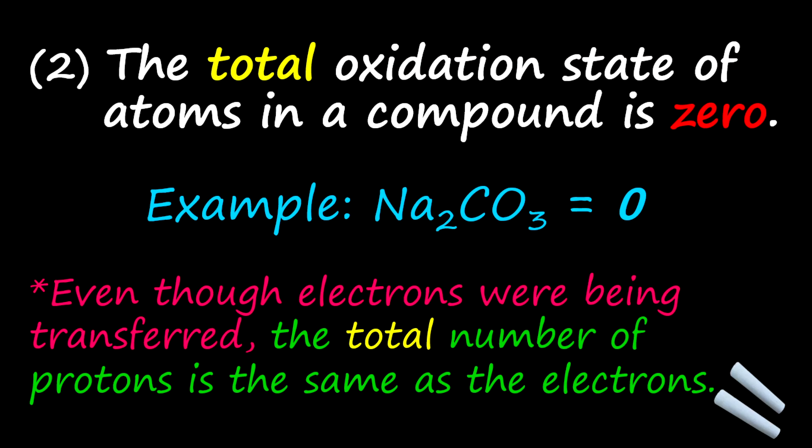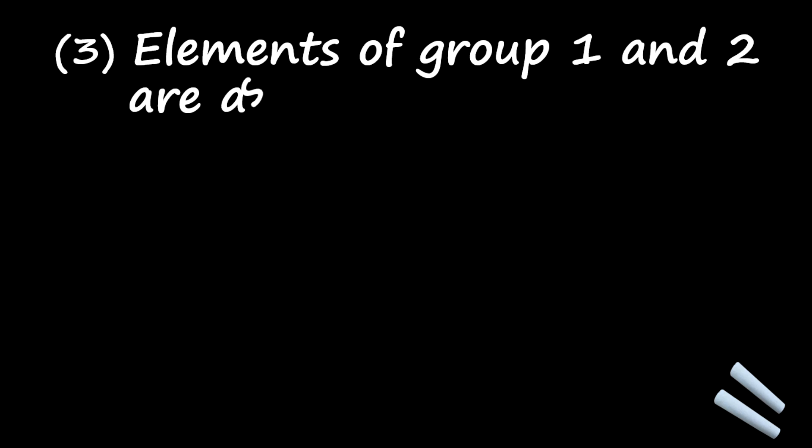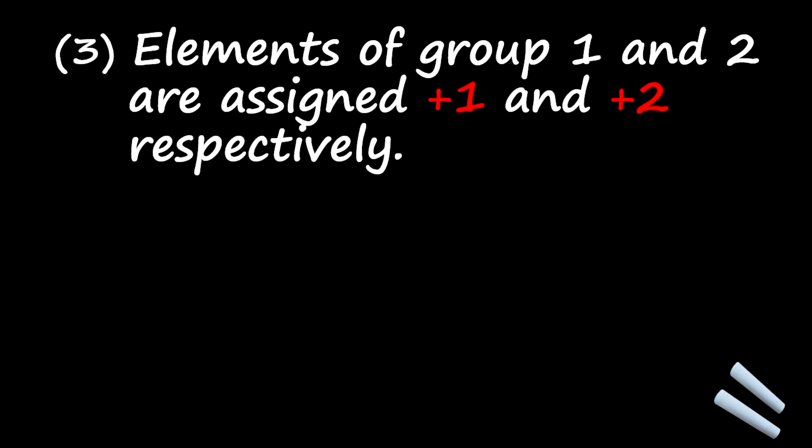Let's look at another rule. In this third rule, it says that elements of group one and group two are assigned positive one and positive two respectively. So therefore, group one elements are always positive one. Group two, they are positive two. Now, examples: sodium is from group one, so it's positive one. Calcium is from group two, so therefore it has a positive two.